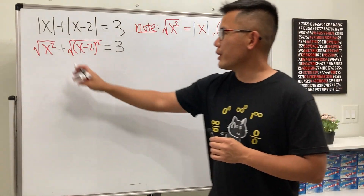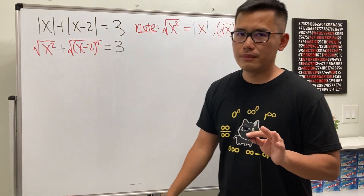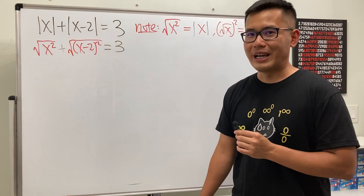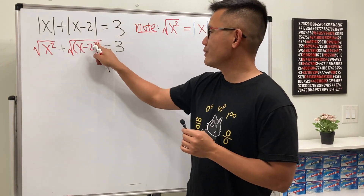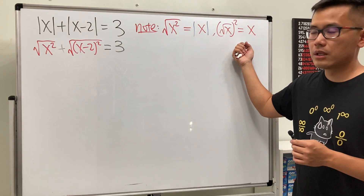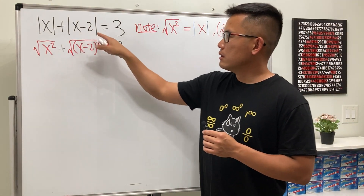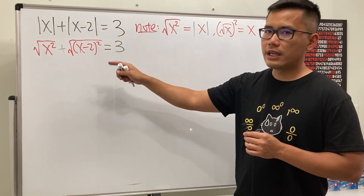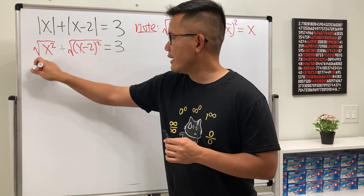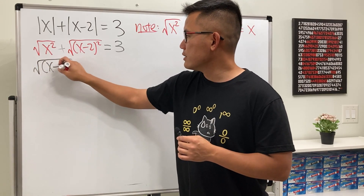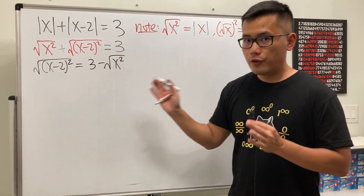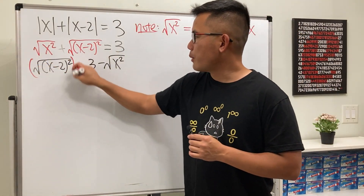What do we do next? Don't just cancel the square and the square root — that takes us back to the original problem. Instead, isolate this part first by moving it to the other side: √((x − 2)²) = 3 − √(x²). Now let's square both sides.